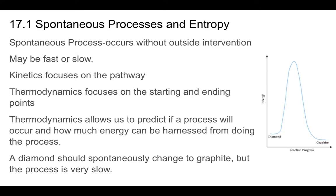De Beers, the company that sells diamonds, claims that diamonds are forever. But if you look at the thermodynamics of diamond and graphite, thermodynamics says a diamond should spontaneously change to graphite. However, because there's such a high activation energy to go from diamond to graphite, the process is very slow. So maybe it isn't forever, but it's for a very long time. Diamonds are going to stick around for a very long time before they change to graphite — the process is slow even though it's thermodynamically favorable.